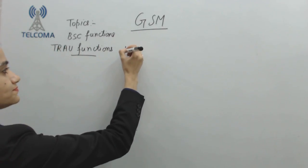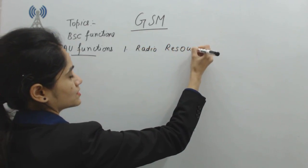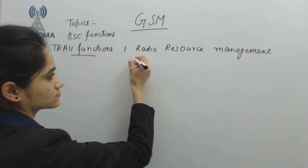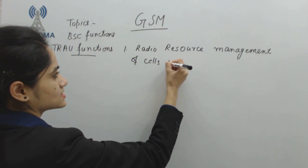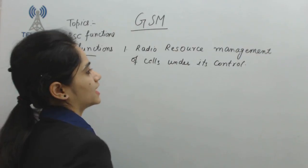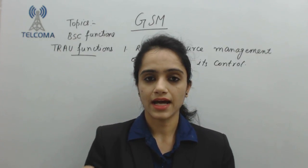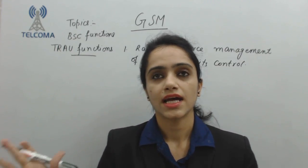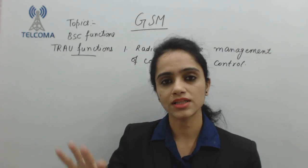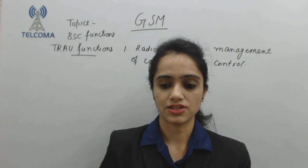The very first function of BSC is radio resource management — management of all cells under its control. It is a manager of all the BTS or all the cells under its control. It has to control the radio resource. BSC stands for Base Station Controller, so it is controlling all the BTS, meaning all the cells under it.